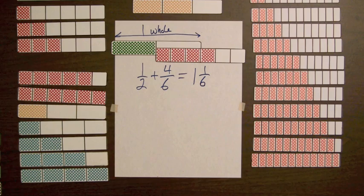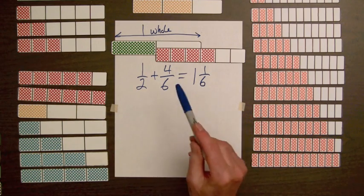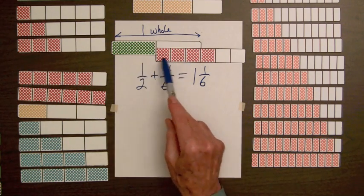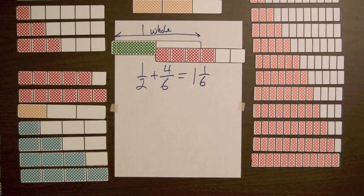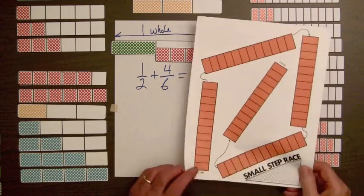Addition means put together, and students can see that even when you're using parts of things, we still put those together to get a total shaded amount. Getting the total shaded amount of two bars, or the sum of two fractions, can be illustrated on the small step race mat.